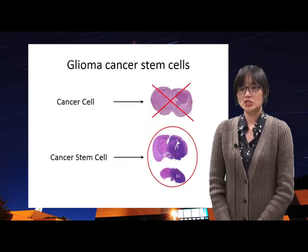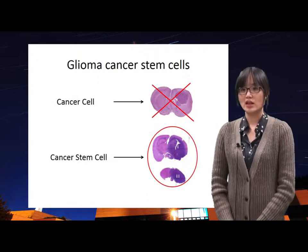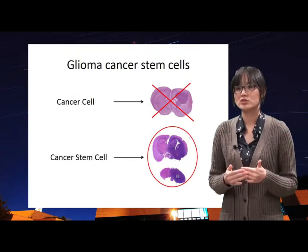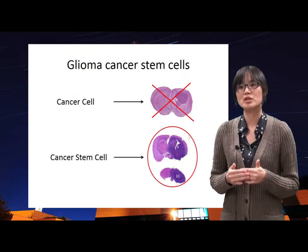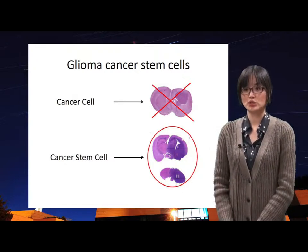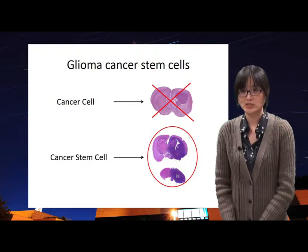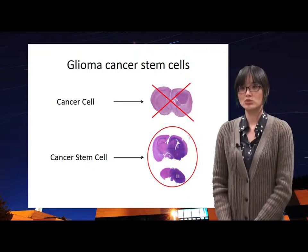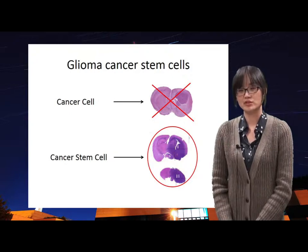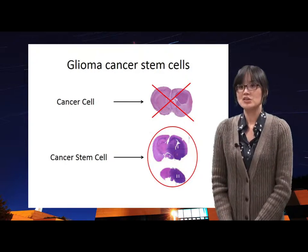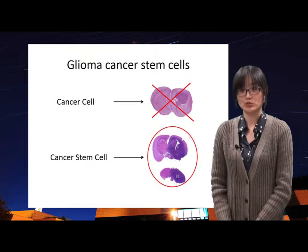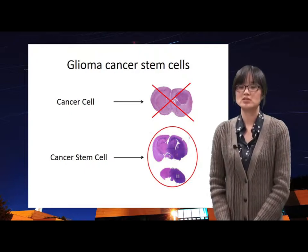Cancer tissue can be made when cancer cells are injected into subcutaneous tissue for in vivo tests. The shape of the cancer tissue formed by cancer cells looks like a beautiful round shape, but this shape is not real. If we inject cancer stem cells into the tissue, the shape is real.